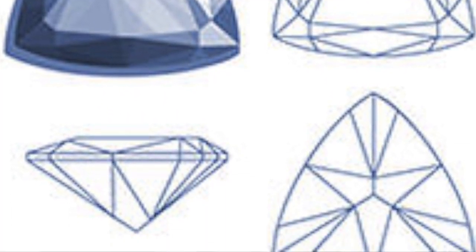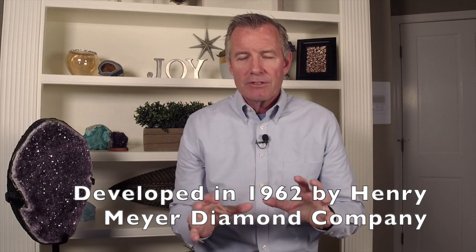The trillion cut is triangular in shape — sort of a fat triangle, puffed out on the sides — and was developed in 1962 by the Henry Meyer Diamond Company. Early on, they had trademarked the name 'trillion cut,' so we couldn't use it on the air on shopping channels. Because we weren't educating people about it, it wasn't selling well. Once the restriction was reduced and we could start talking about the trillion cut, we sold a lot of them and everybody ended up happy.